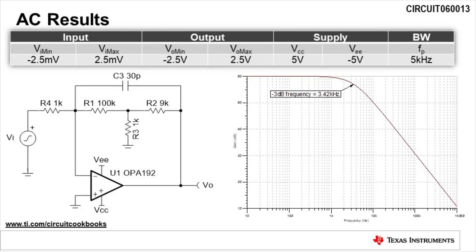Running an AC sweep analysis, we find that the bandwidth of the circuit is 3.42 kilohertz.